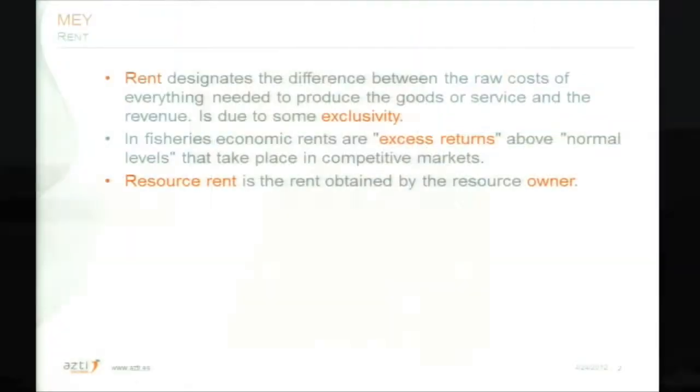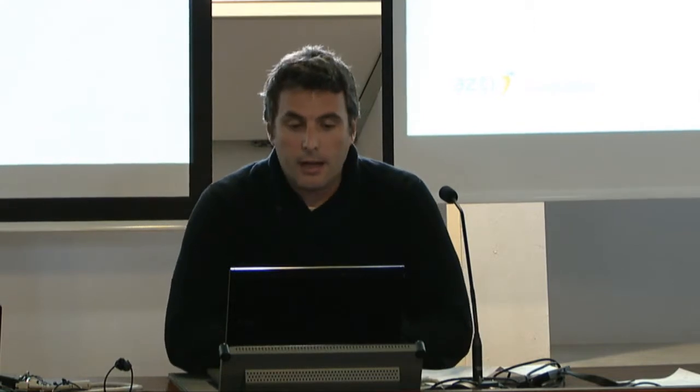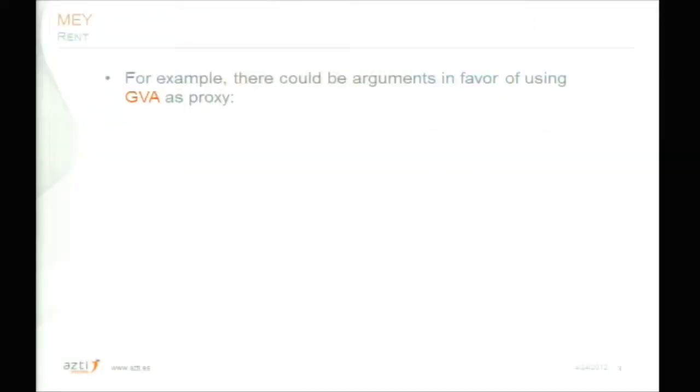Resource rent, which is a typical concept used in fisheries economics, is the rent obtained by the resource owner. The proxy we use in economics for resource rent is under some kind of discussion. For example, there are many arguments in favour of using gross value added as a proxy of rent. Value added is a summation of the capital remuneration and the labour remuneration. First, labour has rent because it is paid on a shared basis. Second, the skipper ownership at a relatively small scale of fishing companies blurs the distinction between labour and capital remuneration.